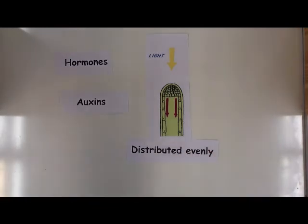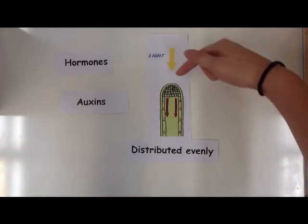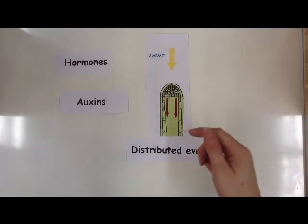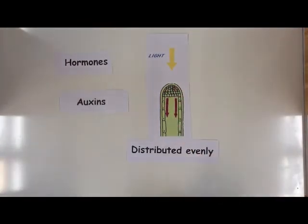And generally speaking, the auxin here is distributed evenly. Okay, so what you'll have is light directly above the shoot tip. And as a result, the growth is equal towards the light. Okay, because there's equal distribution of the auxin here. So it's just going to grow upwards.